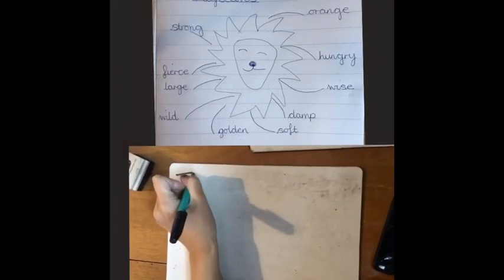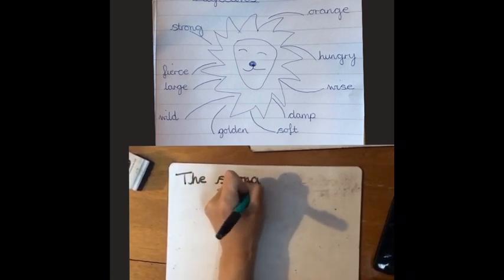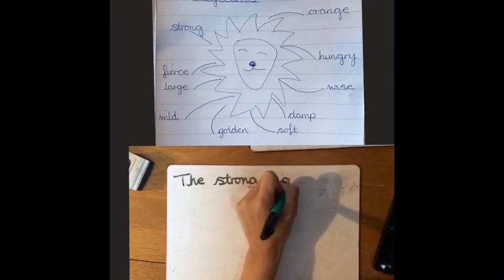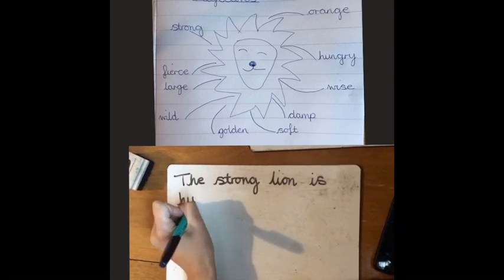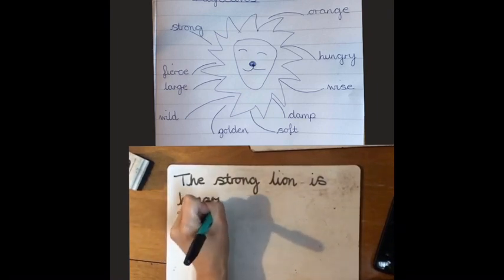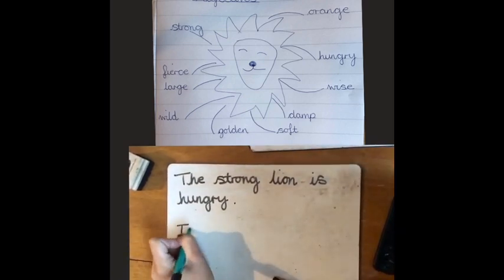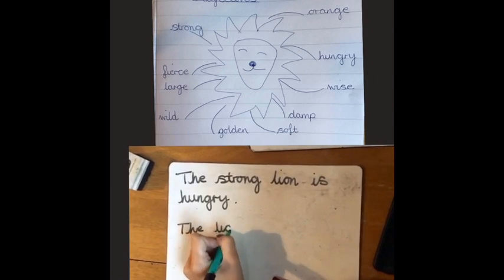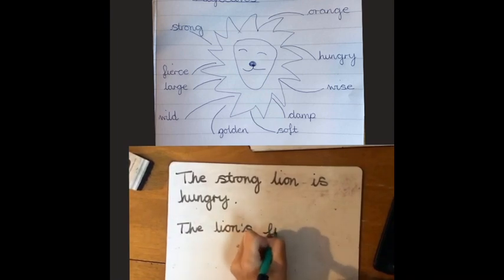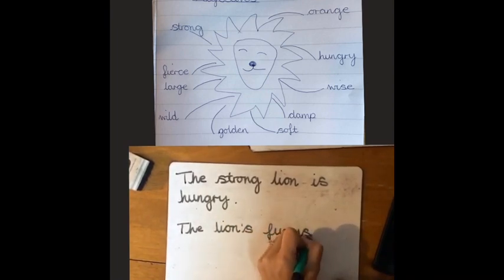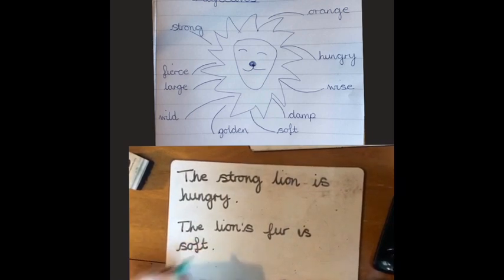Once you have some adjectives to describe your lion, I want to see if you can write some sentences about your lion and include those adjectives. If you have a look at mine here, I'm writing: the strong lion is hungry. I remembered my capital letter and full stop as well today. I'm going to try and write another sentence now.